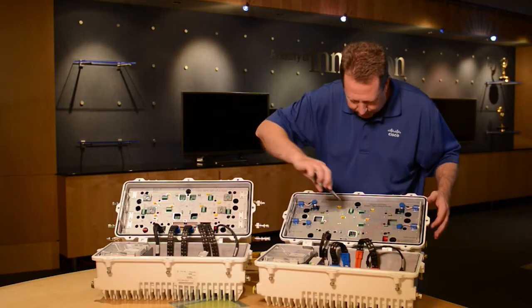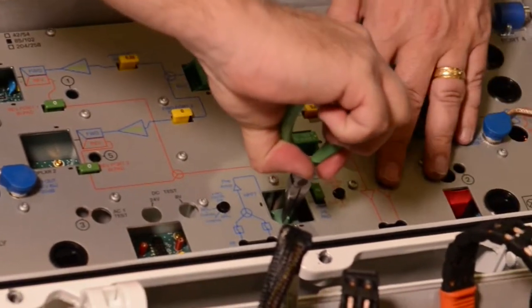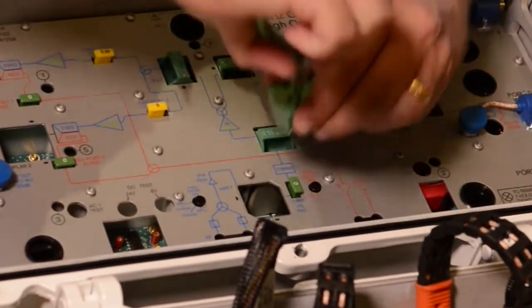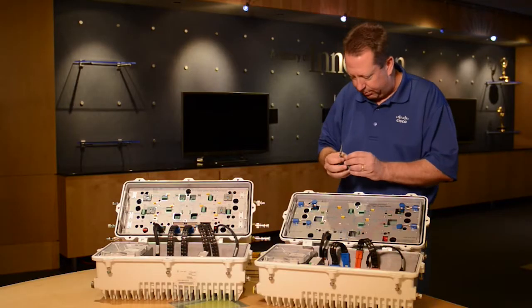Next, you remove the high pass filter. Again, using a pair of needle nose pliers. There's a little tab that makes it easy to remove.